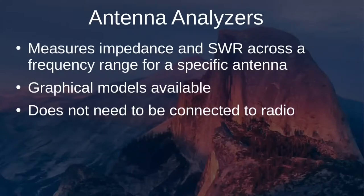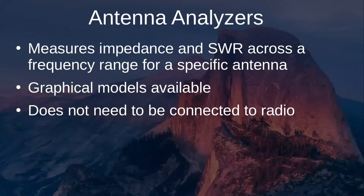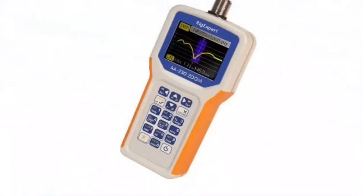Antenna analyzers measure impedance and SWR across a frequency range for a specific antenna. Graphical models exist and do not need to be connected to the radio — you can hook up to your antenna and see the SWR across a range of frequencies before connecting to the radio. A photograph of a RigExpert antenna analyzer shows a resonant frequency at the center with higher SWR on the edges.